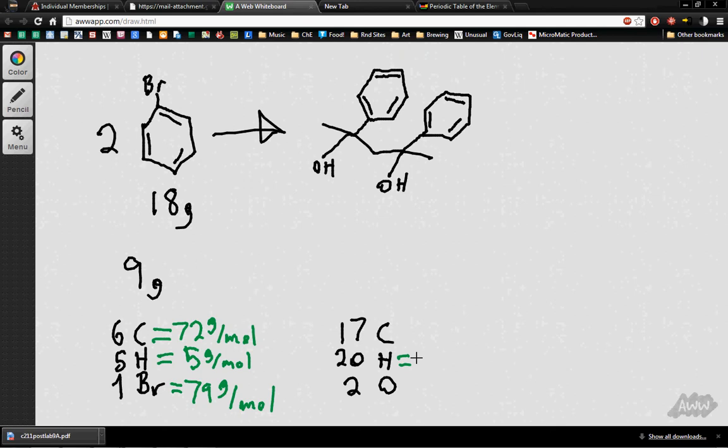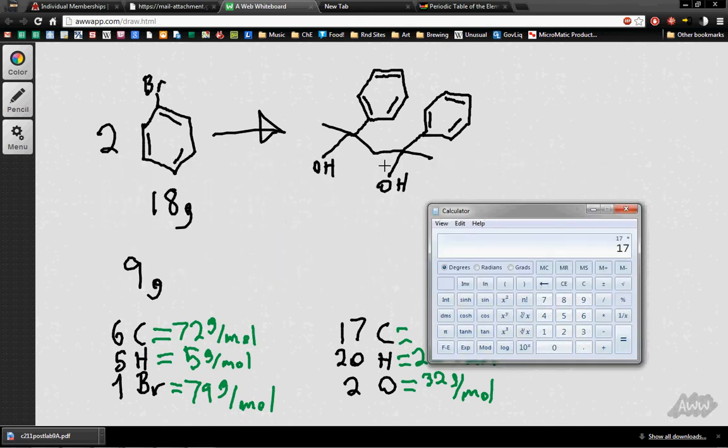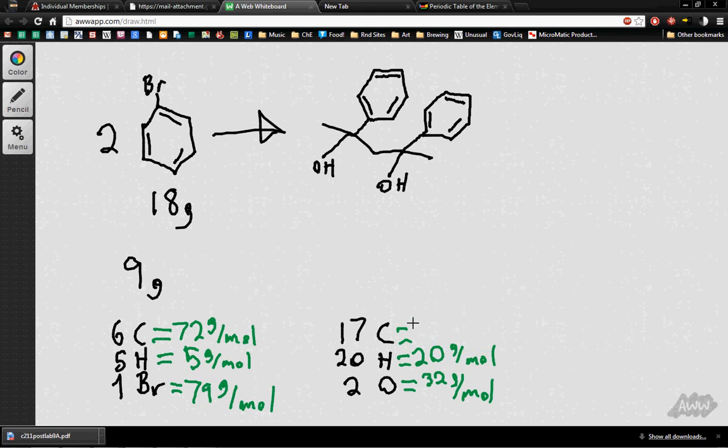And over here we've got 20 hydrogens, so this is going to be 20 grams per mole. And two oxygens, so that'll be 32 grams per mole. And 17 carbons, so that'll be 204.